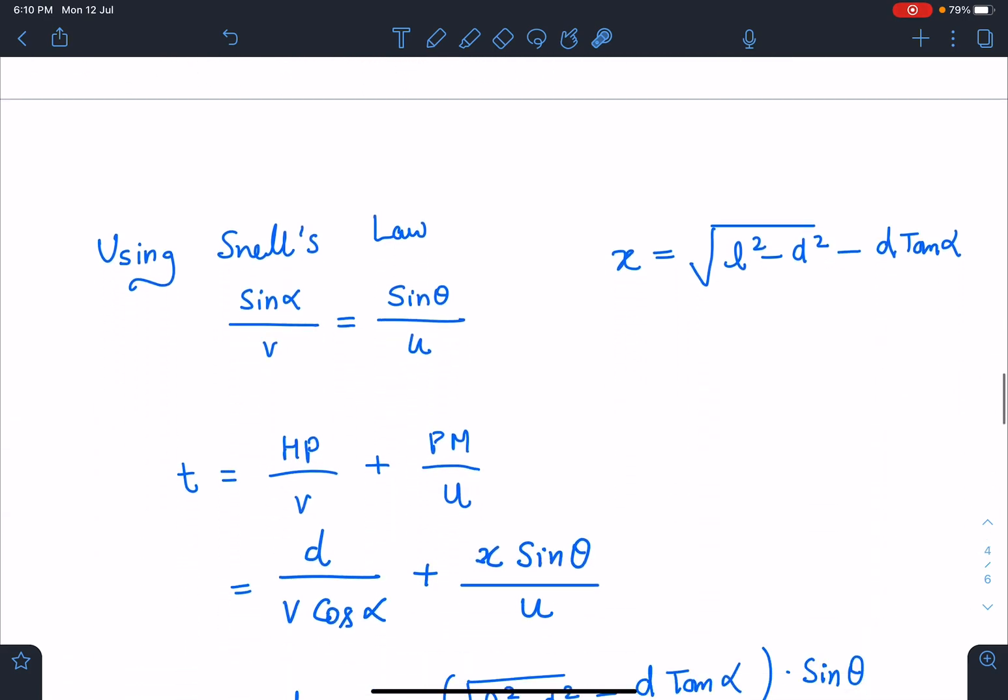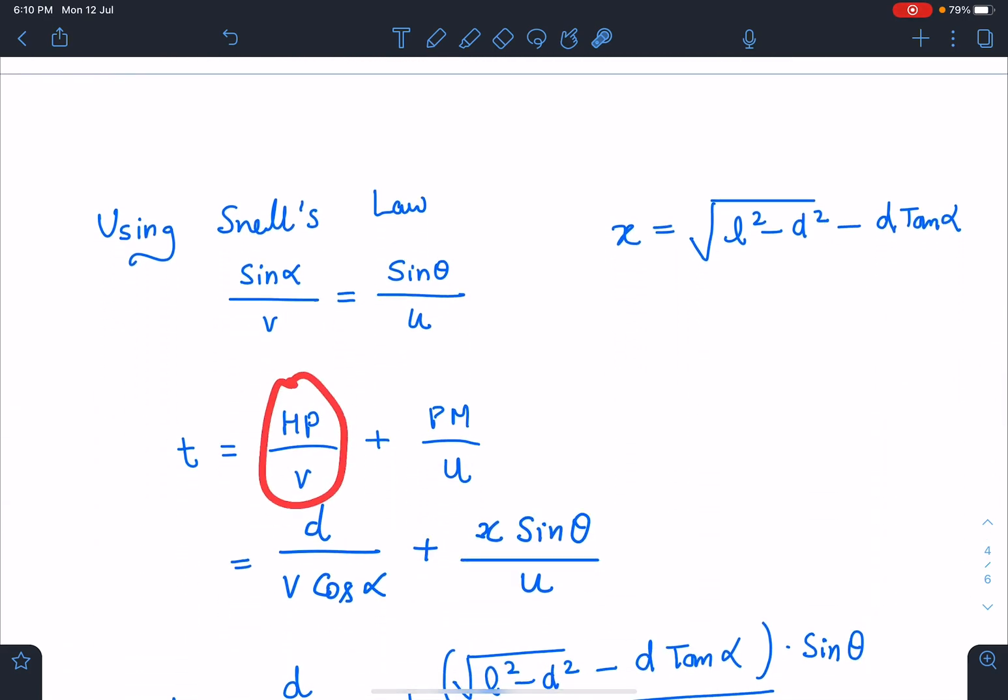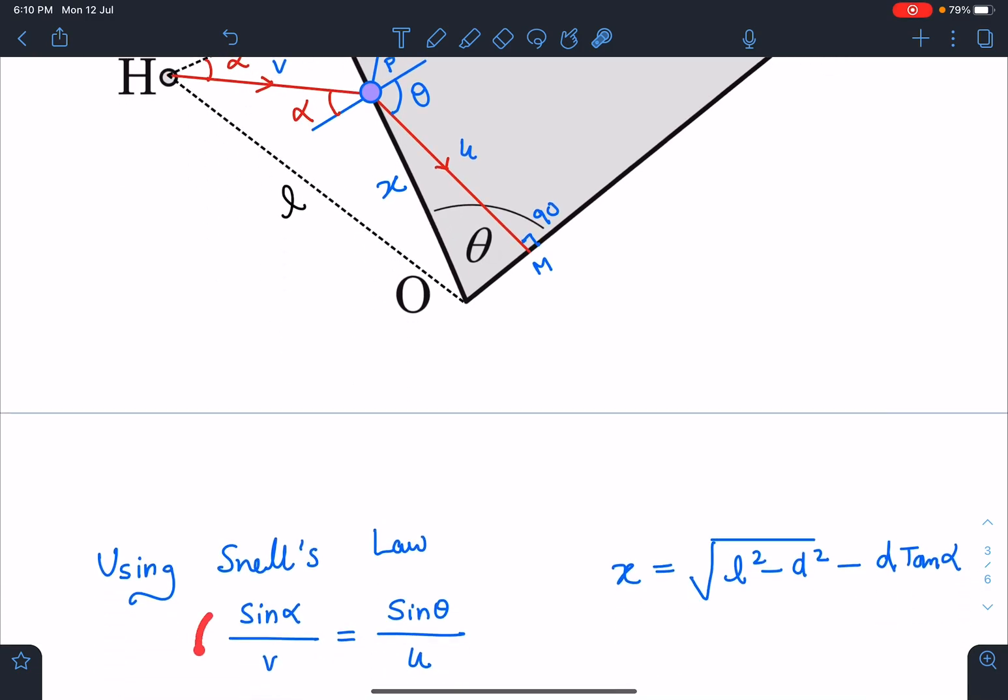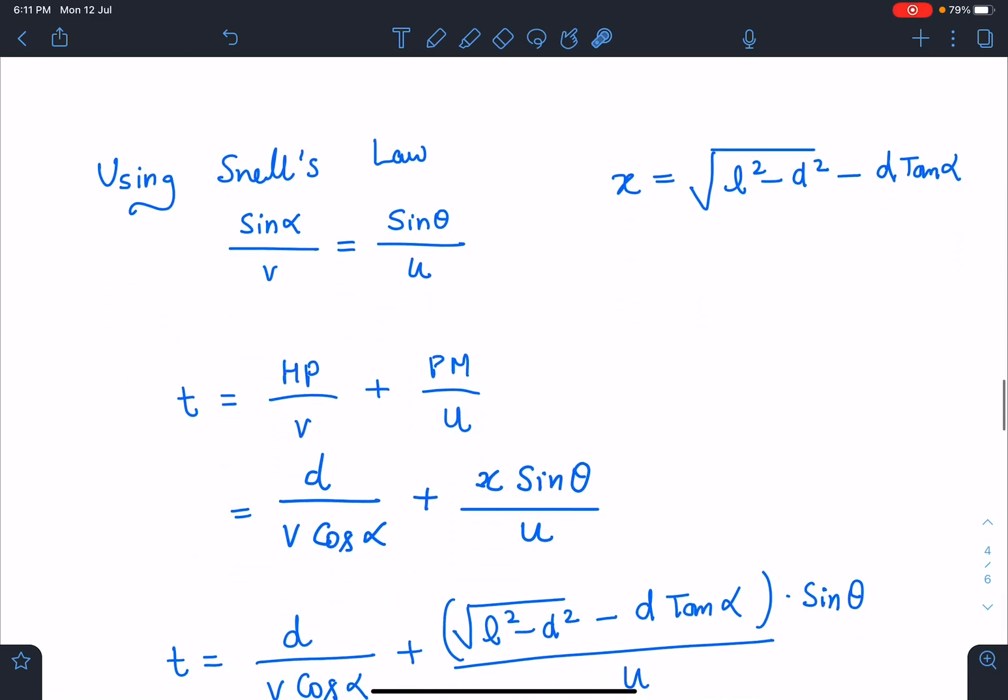And for minimum case, I can use this logic of Snell's Law. Basically, α is known to me for minimum time, and that is nothing but v sin θ / u. So here, this HP value is basically d / cos α.